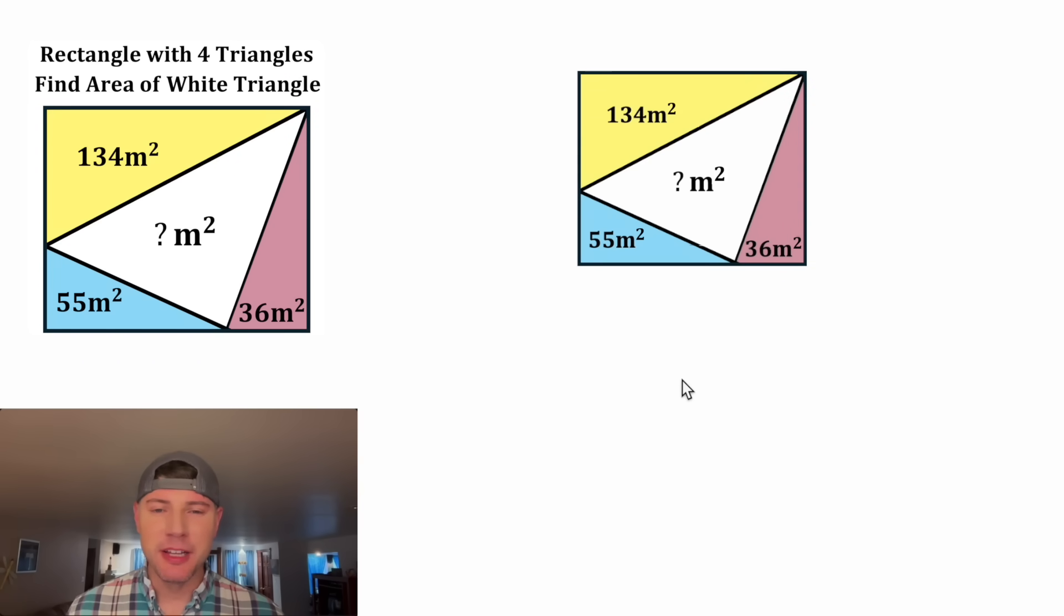First, I'm thinking I want to write a formula that we can solve for the area. So if we call the width of the rectangle W and the height of the rectangle H, then we have everything we need to write a formula for the question mark. The area of the white triangle will equal the area of the entire rectangle, which is WH, minus the areas of each of these three triangles.